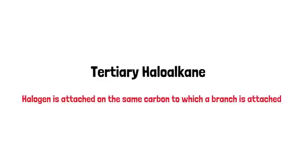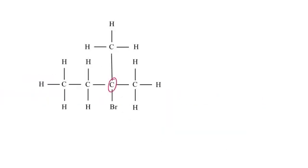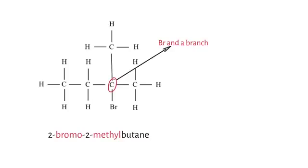Now let's move on to the tertiary haloalkane. Here, the halogen is on the same carbon as the branch — the halogen is attached to the same carbon to which a branch is attached, and that's how we identify a tertiary haloalkane. In this example, carbon number two has a methyl branch as well as bromine. When we write the IUPAC name, it's 2-bromo-2-methylbutane — a quick example of a tertiary haloalkane.